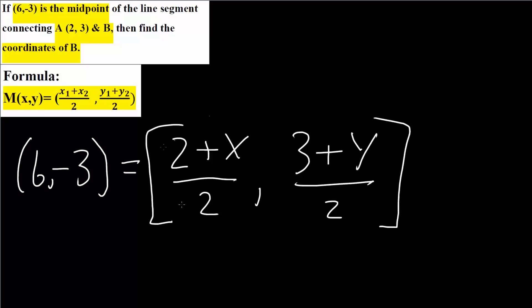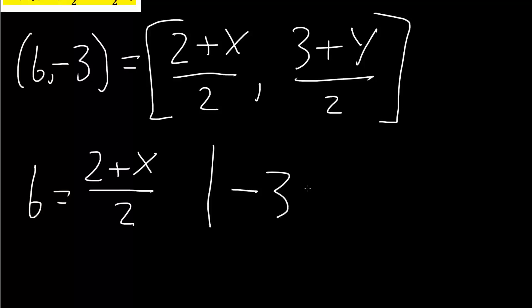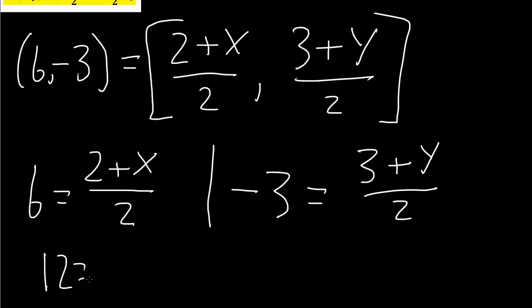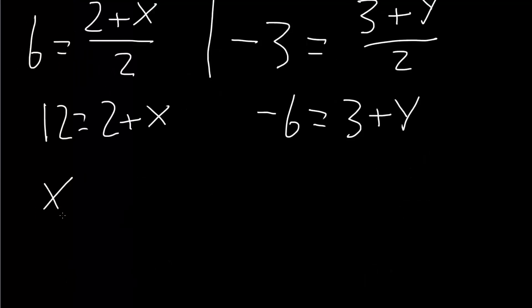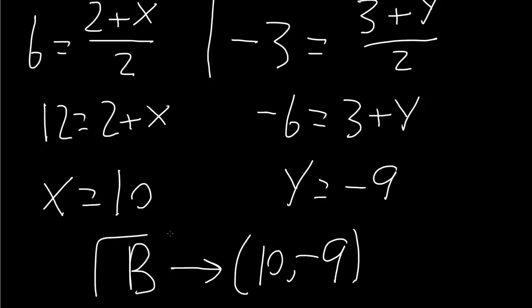We match x with x and y with y. We get: 6 equals (2 plus x) divided by 2, and negative 3 equals (3 plus y) divided by 2. Multiplying through: 6 times 2 is 12 equals 2 plus x, and negative 3 times 2 is negative 6 equals 3 plus y. So x equals 10 and y equals negative 9. Therefore the coordinate of B is (10, negative 9) — that is our final answer.